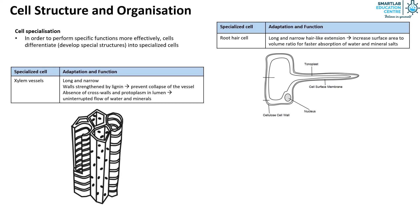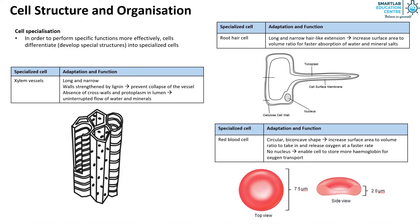Lastly, the red blood cell. It has a circular, biconcave shape which increases the surface area to volume ratio to take in and release oxygen at a faster rate. It has no nucleus which enables the cell to store more hemoglobin for oxygen transport.